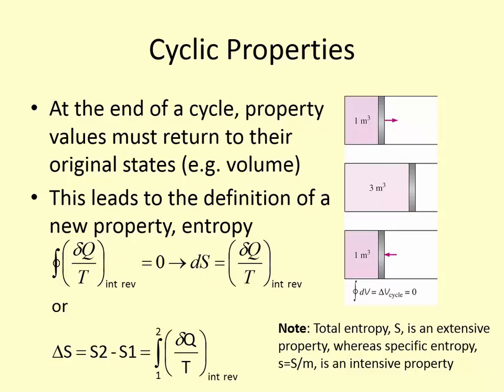Entropy is based on the initial and final state of the system as well as the process it undergoes. Total entropy S is an extensive property depending on the size of the system. Dividing by mass gives lowercase s, an intensive property. We treat entropy like a property even though it behaves differently from others. Rewriting the integral: ds = δq/T, so integrating gives ΔS = S₂ − S₁ = ∫₁² δQ/T.